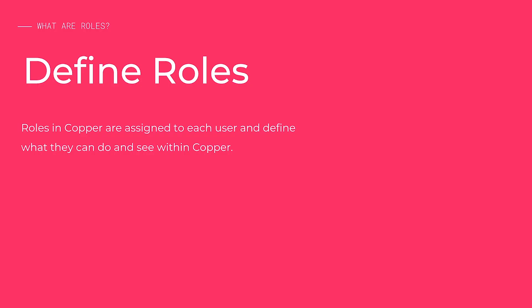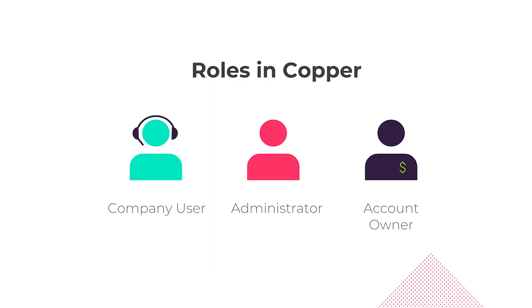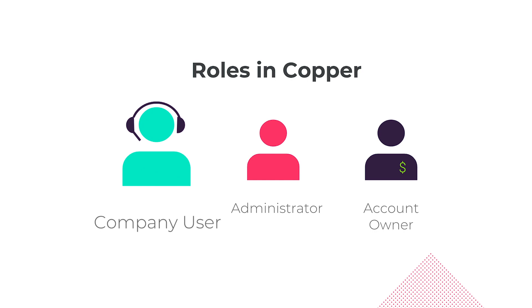Now let's understand who from your team does what in Copper. Copper offers three roles for you and your team members to occupy. Company user is your standard team member — they manage contacts and close deals.